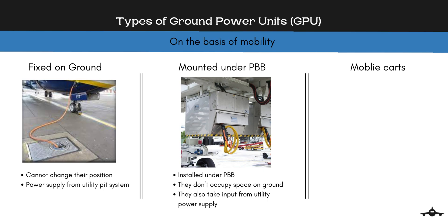Bridge-mounted GPUs are installed under a passenger boarding bridge. They are preferred because they do not occupy space on the ground and their cable wires don't create any hindrance or safety hazard. They also take input from the utility power supply.